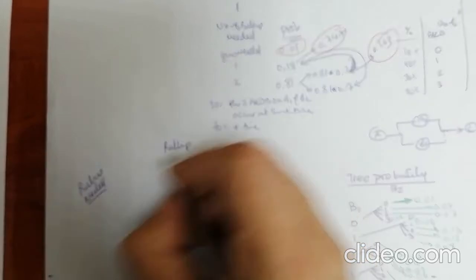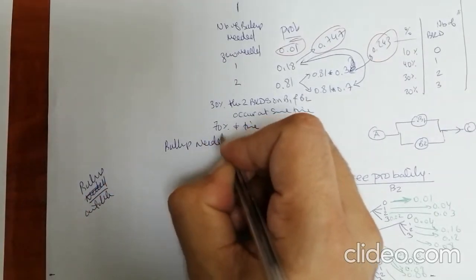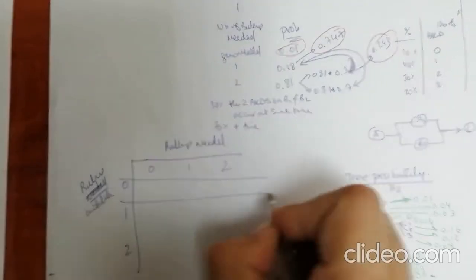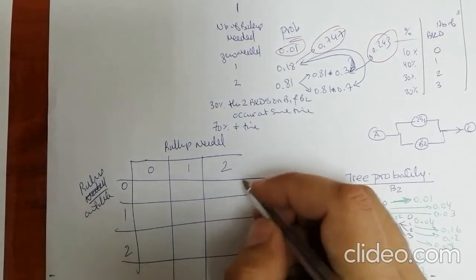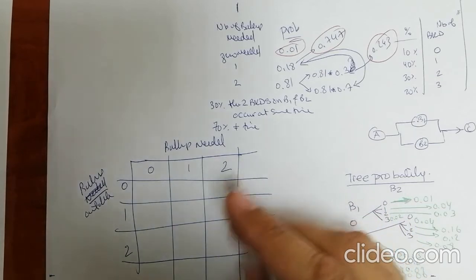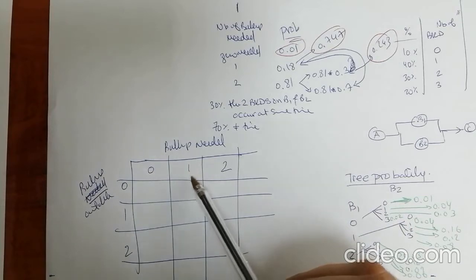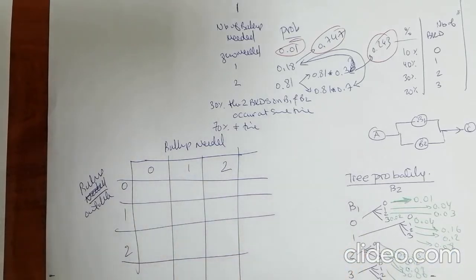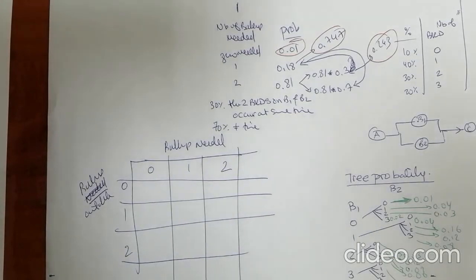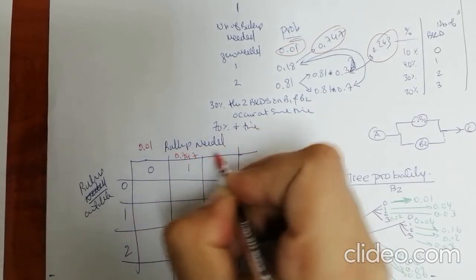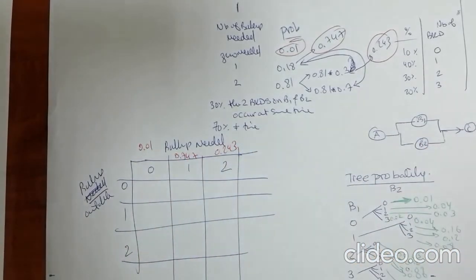In the decision tree, we compare available backup systems versus needed backup systems, with values of zero, one, or two for each. How many backup systems to buy: zero, one, or two, multiplied by the probability values. If zero are available and zero are needed — no loss. If zero are available and one is needed, or zero available and two needed, we calculate the money lost, going back to the method from the earlier case studies. The probabilities are: zero needed at 0.01, one needed at 0.747, two needed at 0.243.